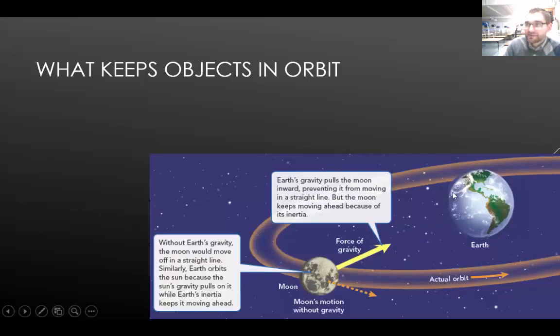What happens is, inertia tries to keep the Moon in the direction that it is going. The force of gravity tries to pull it back. These two counteracting forces cause the Moon to stay in orbit around the Earth. Inertia wants the object to continue in the direction it's going. Gravity wants to pull it back. The same reason occurs for us staying in orbit around the Sun.